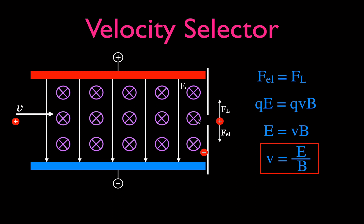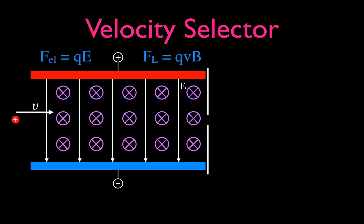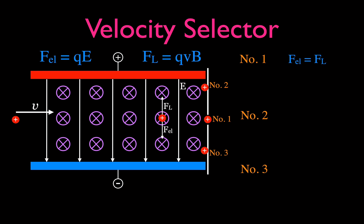We'll do a simple problem like that at the end of the video. Some particles are filtered out because they have the wrong velocity. There are three possible outcomes: particles that travel straight through reach position one, particles deflected upward reach position two, and particles deflected downward reach position three. Particles reach position one because the electric force equals the Lorentz force, and the velocity is E divided by B.